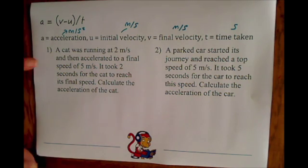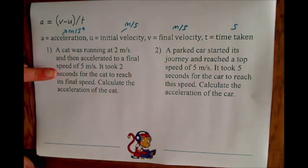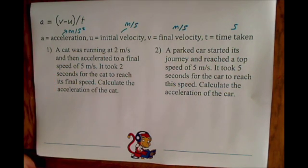We've got this question here: a cat was running at 2 meters per second and then accelerated to a final speed of 5 meters per second. It took 2 seconds for the cat to reach its final speed. Calculate the acceleration of the cat.